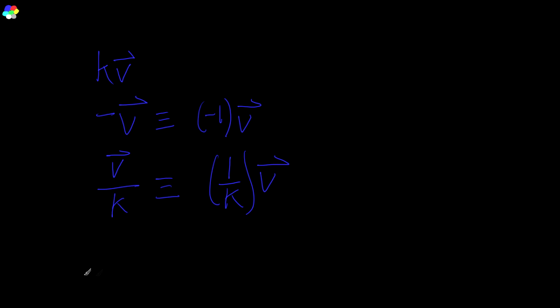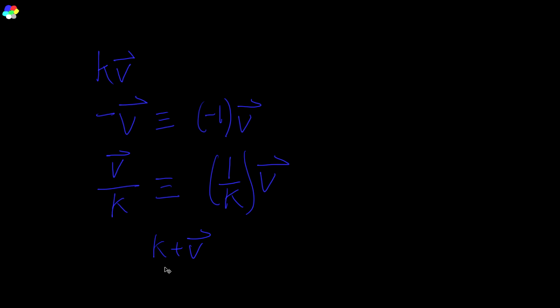You cannot add a vector to a scalar — that's not a thing. Likewise, subtracting a vector from a scalar doesn't work either — they just don't mix. Vectors can be multiplied and divided by scalars, but you can't add or subtract them together.